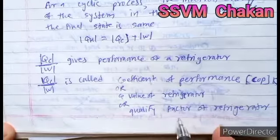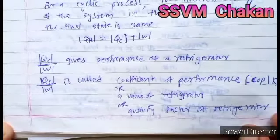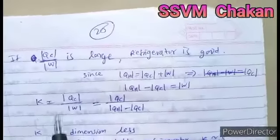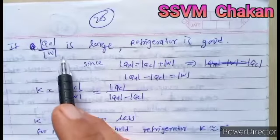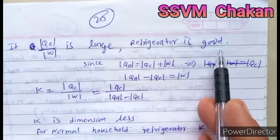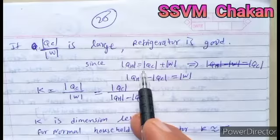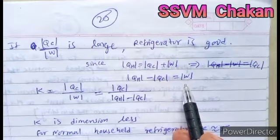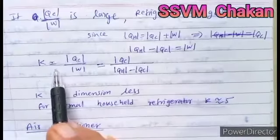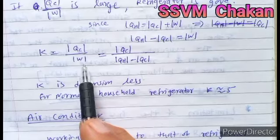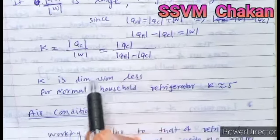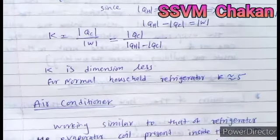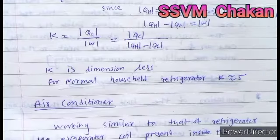The COP (K) is also called the Q-value or quality factor of the refrigerator. If Q_C divided by W is larger, the refrigerator is better. Since Q_H equals Q_C plus W, or Q_H minus Q_C equals W, the coefficient of performance K equals Q_C divided by W. K is dimensionless. For a normal household refrigerator, the K value is approximately 5.